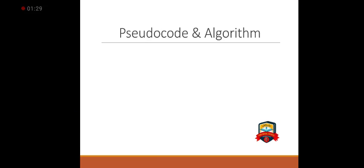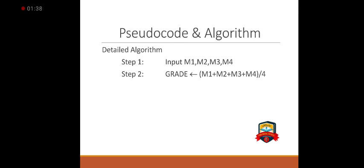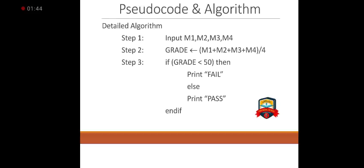The algorithm of the problem will be: Step 1 - input 4 numbers. Step 2 - grade will be checked. If grade less than 50, then print fail, else print pass.